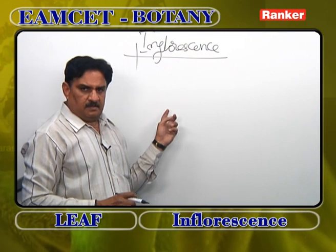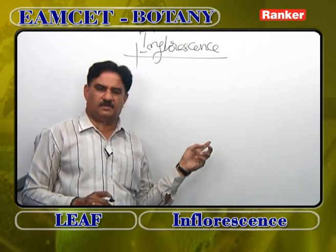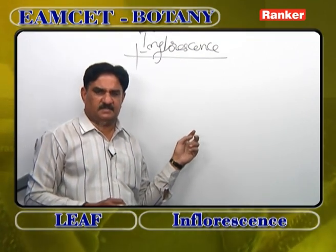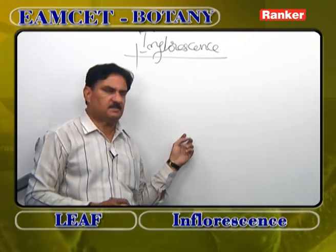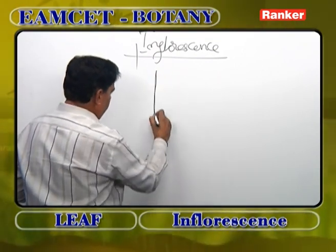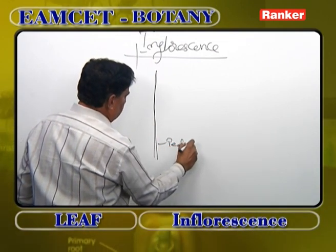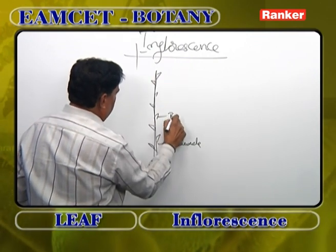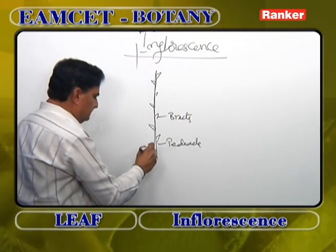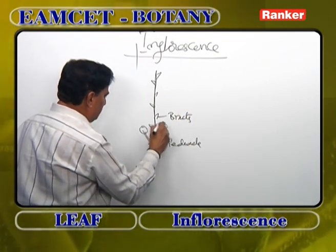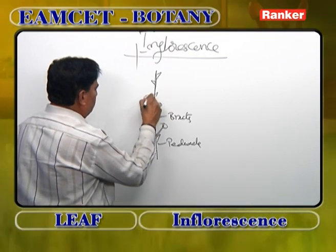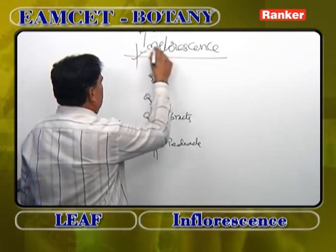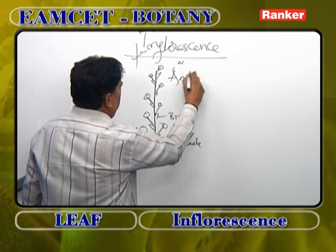What is inflorescence? The stem, after growing for some time, produces a special, weak, delicate branch called the peduncle. On the peduncle, small leaf-like structures are produced called bracts. From the axils of the bracts, either pedicellate flowers or sessile flowers are produced. This method of arrangement of flowers on the peduncle is called inflorescence or anthotaxis.